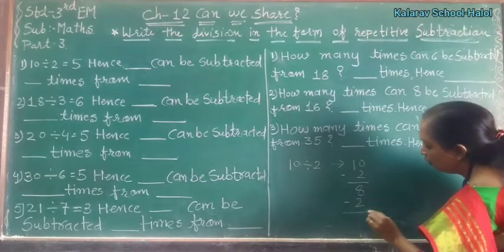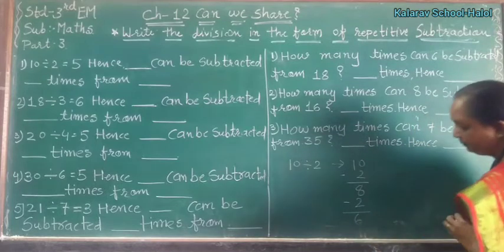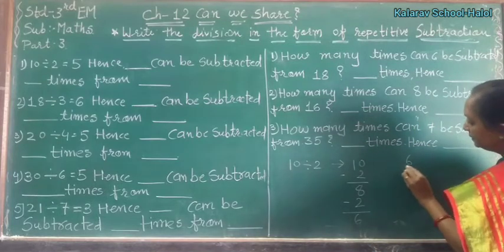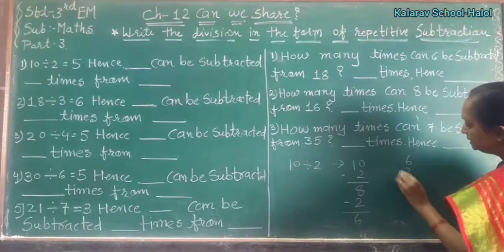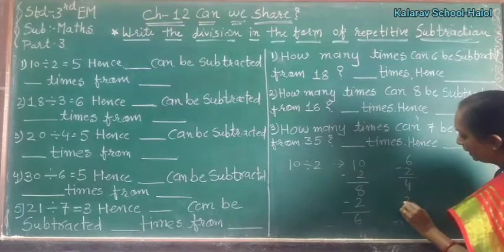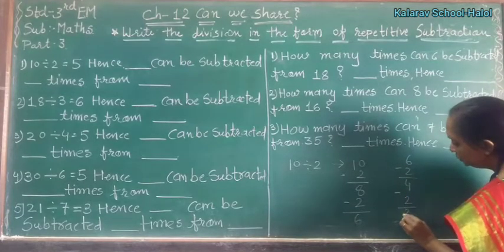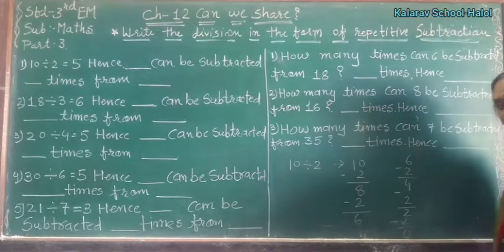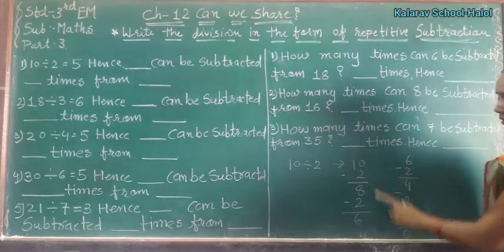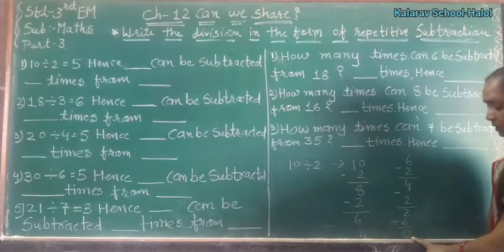Then 8 minus 2, answer is 6. Then 6 minus 2, answer is 4. And 4 minus 2, answer is 2. And 2 minus 2 is 0.